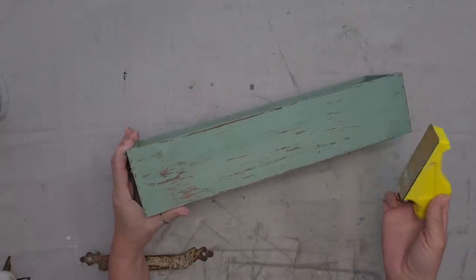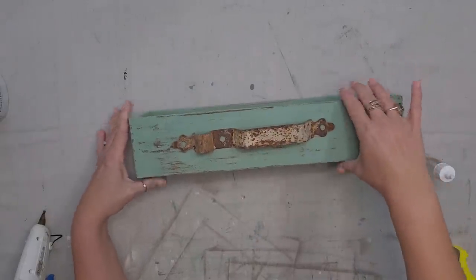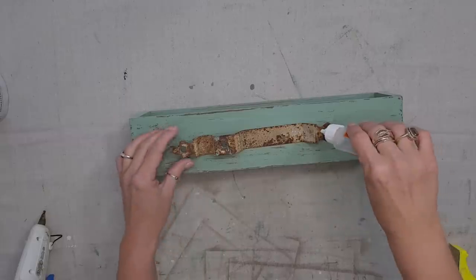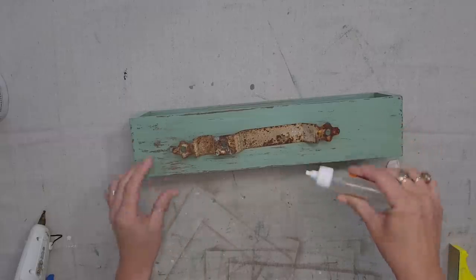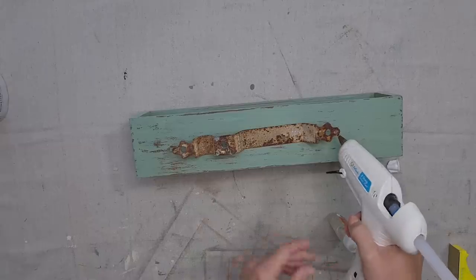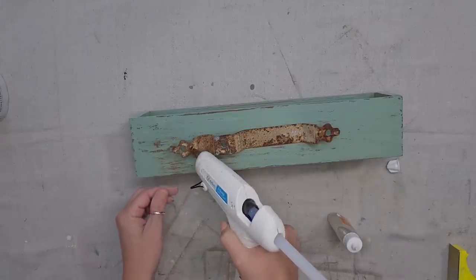So this box is too thin to put screws in here. So to attach my hardware, I'm going to do a combination of Gorilla Glue and Hot Glue. The Gorilla Glue will permanently keep it in place and then the Hot Glue will temporarily keep it in place while the Gorilla Glue dries.